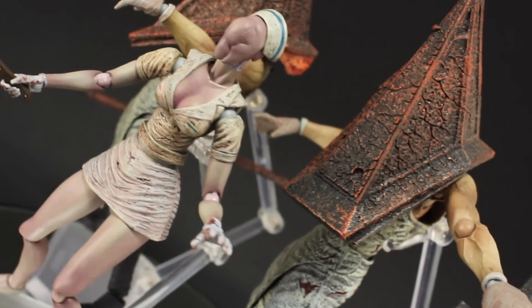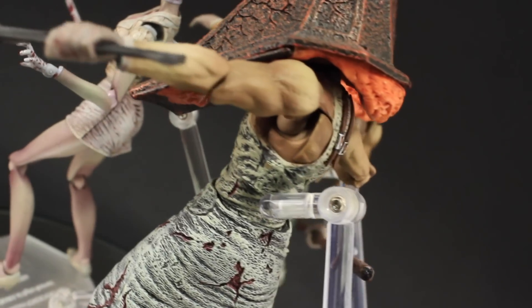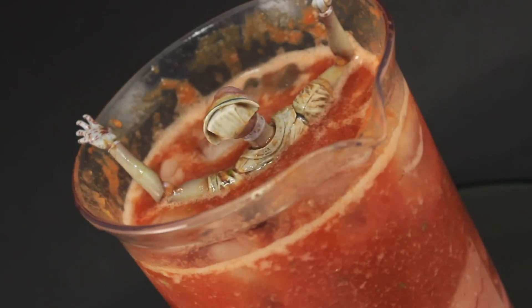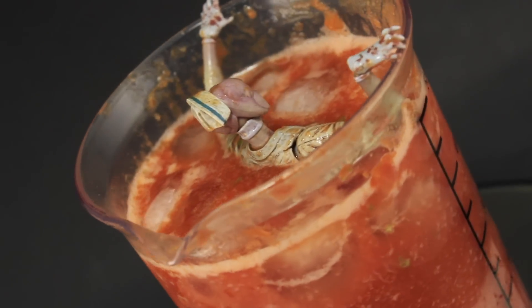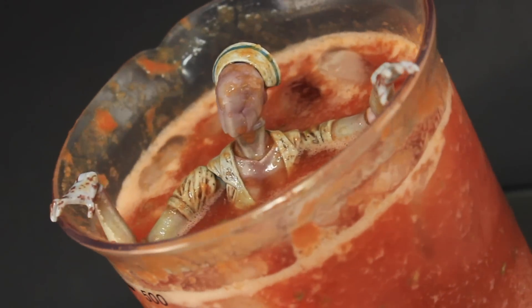But anyway, what can I say? Buy it. Buy ten of them. God, you can't have enough Silent Hill nurses. You need it. Three minimum, just so you can use all those heads. But anyway, as always, thank you very much for watching. Leave a like if you want, subscribe if you want, and make sure to come back for more Figma reviews. See you next time.